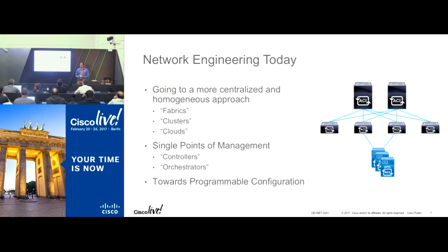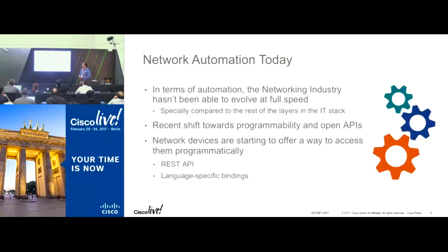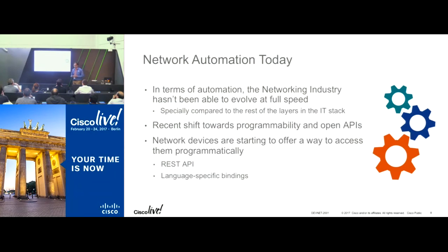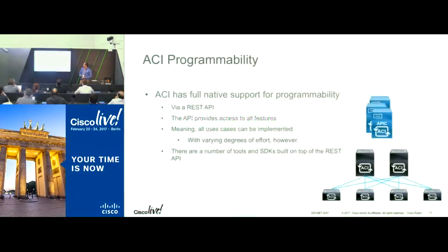What are the different mechanisms to automate things? The main common approach is through REST APIs. In ACI, to simplify things further, we have different options. One is to directly use REST. To simplify REST, we have something called Cobra SDK, which is Python bindings where you can use functions and write code. To simplify even further, we have something called ACI Toolkit.